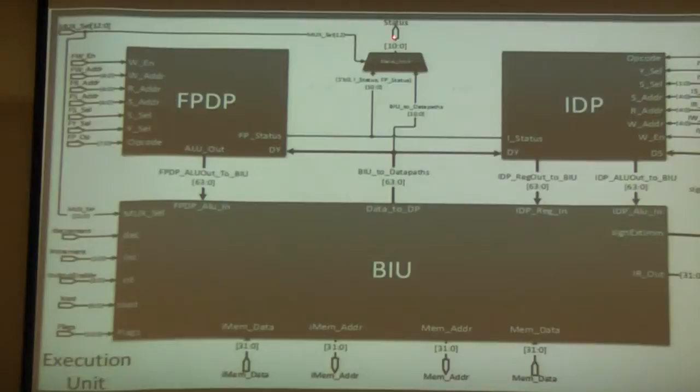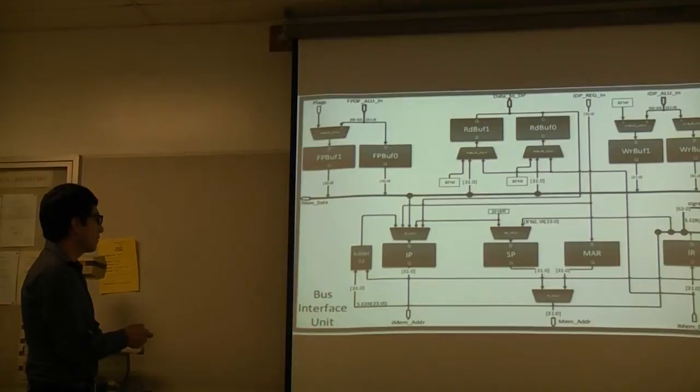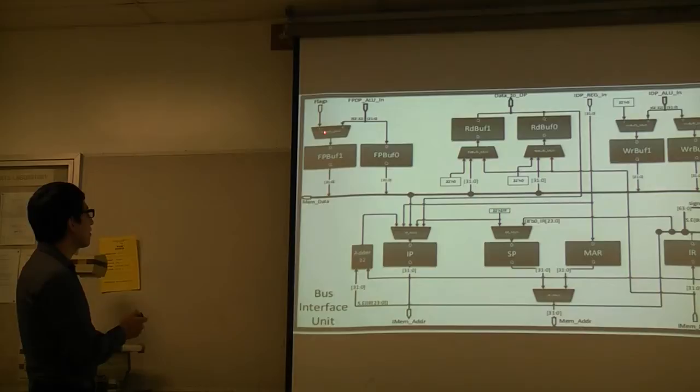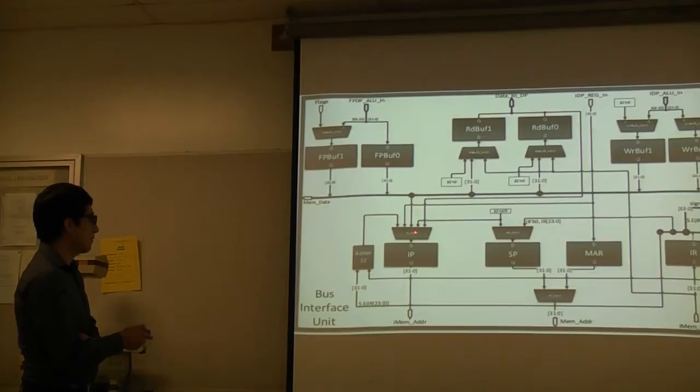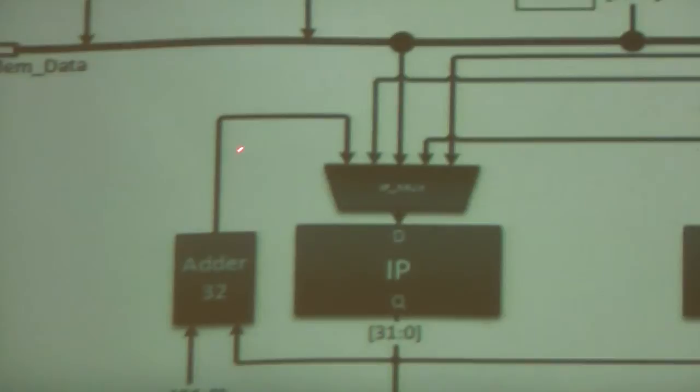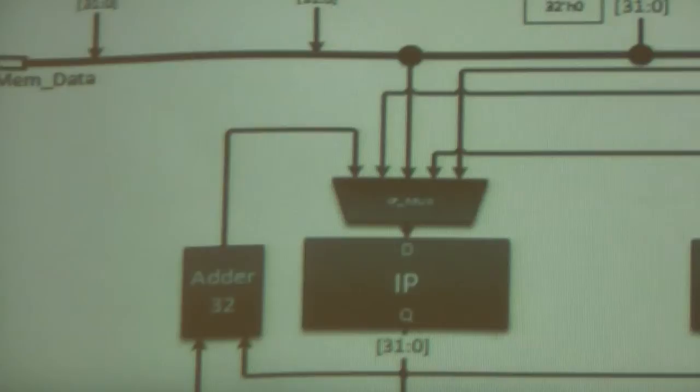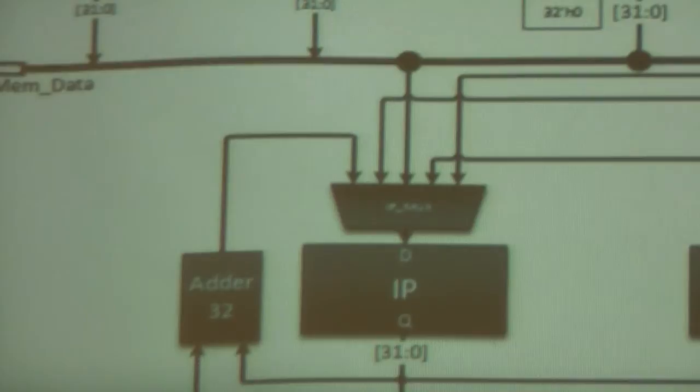Here is our bus interface unit. A couple things I'd like to point out here, these are the flags coming from the control unit. They go into this MUX, which goes into our FIFO register, and from there we can push them onto the memory. A couple of these MUXes, like the IP MUX, we had to add more signals to do all the baseline instructions. Here we have the adder, which goes in to generate effective addresses for all of the relative instructions.